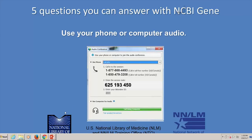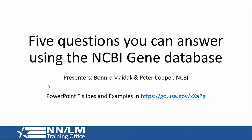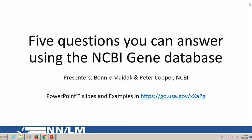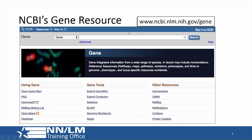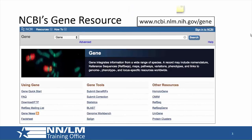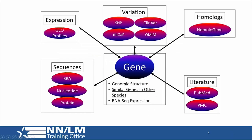Welcome everyone. We will be using the Gene database today to answer five questions that are very common questions. You can get to the Gene resource from the NCBI homepage by adding the word gene to the URL or doing an internet search of NCBI and gene. Gene is a collection of a lot of data from different databases at NCBI. It also has some information within itself such as the genomic structure of a gene, similar genes in other species, and RNA-seq expression data.